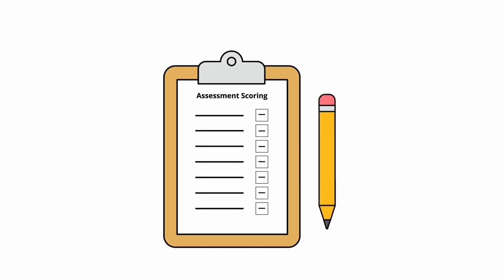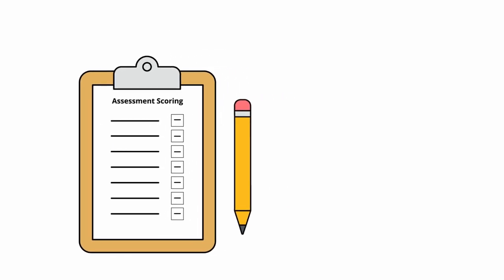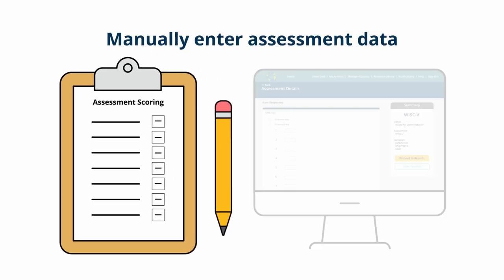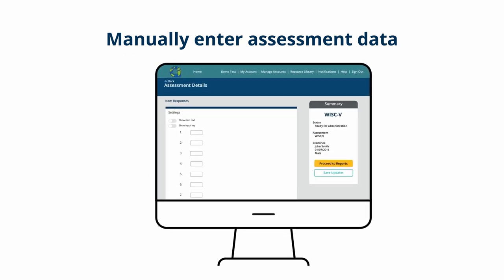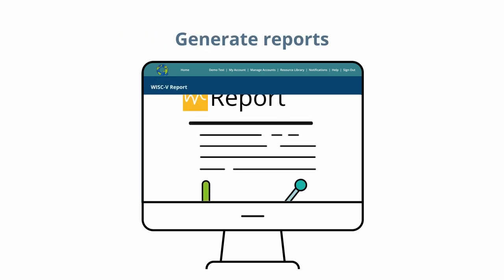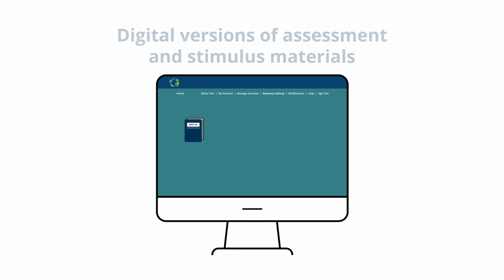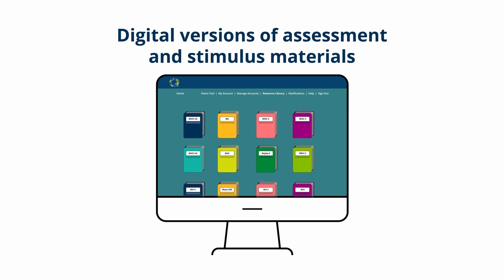Finally, if you've administered your assessment via paper and pencil, that's no problem. You can also use Qglobal to manually enter your assessment data from a record form into Qglobal, to allow the 100% accurate scoring engine to do the work for you and also generate your report. We now also have digital versions of our assessment stimulus materials and manuals to use on Qglobal.